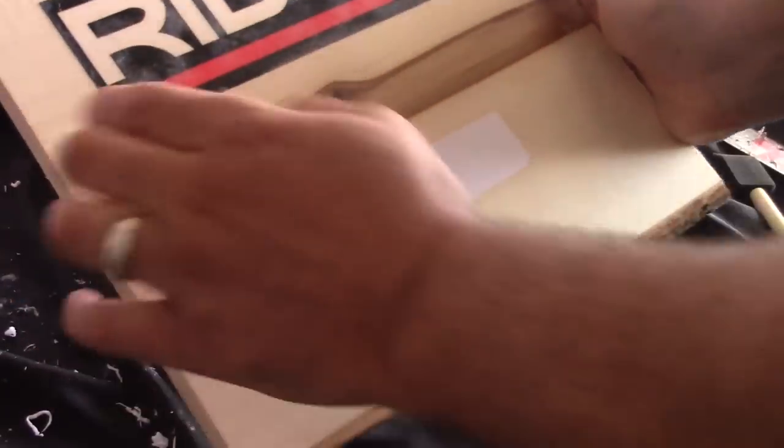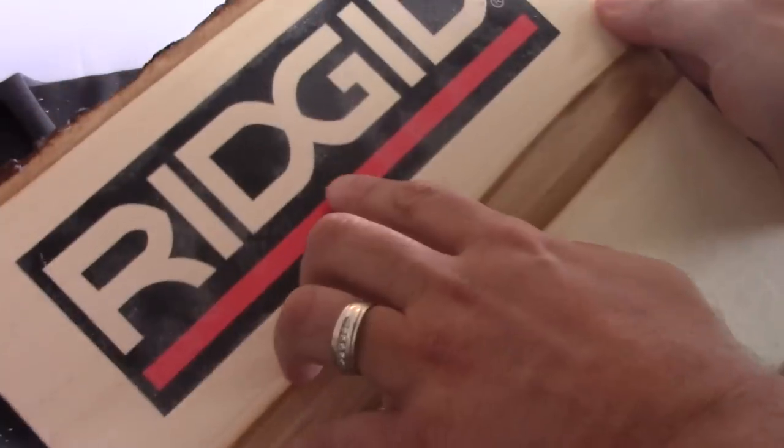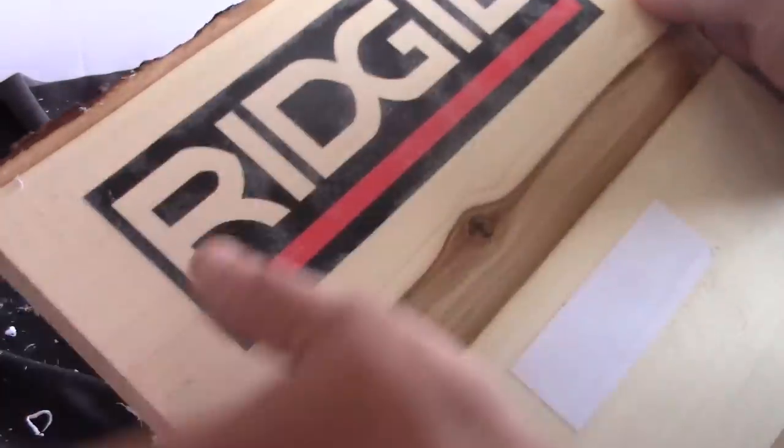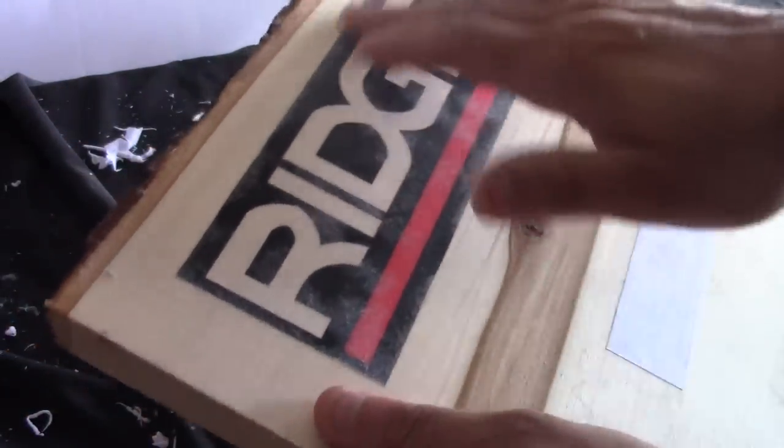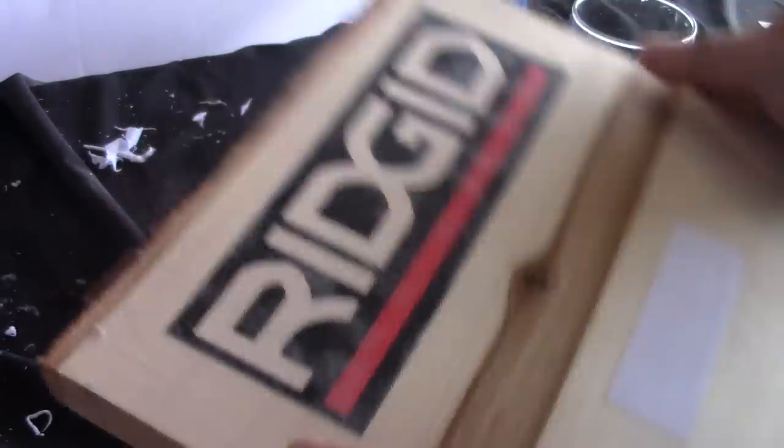So now that I got the heavier paper off you can see that there is still a little bit of a film on there. So you want to hit it with a little bit more water, just a little bit, and you're gonna rub that off. So just make sure that you get all that white film off there because you don't want that to shine through.